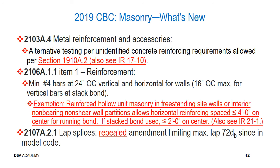Regarding 2106A.1.1 item 1 for reinforcement, the minimum reinforcing steel of #4 bars at 24 inches on center vertical and horizontal for walls remains, with a reduction to 16 inches on center maximum for vertical bars in stack bond masonry. However, a new exemption now allows reinforced hollow unit masonry freestanding site walls or interior non-bearing non-shear wall partitions to increase horizontal reinforcing spacing up to 4 feet on center for running bond, or 2 feet for stack bond. This is consistent with what has been allowed in IR 21.1 but now has specific code language.